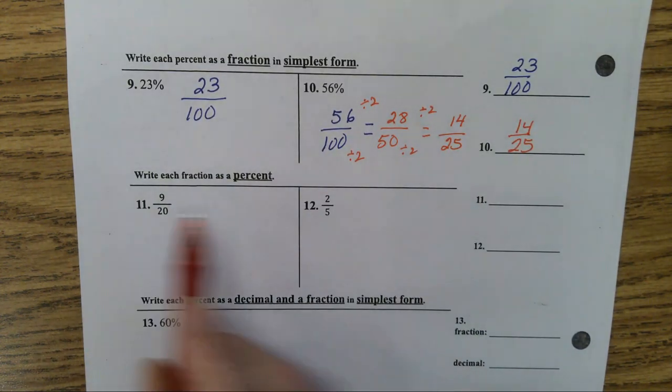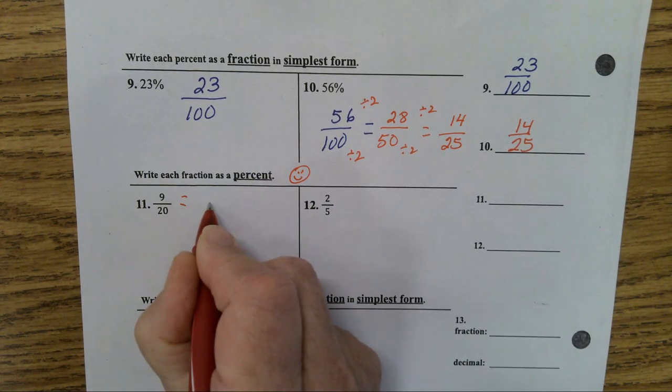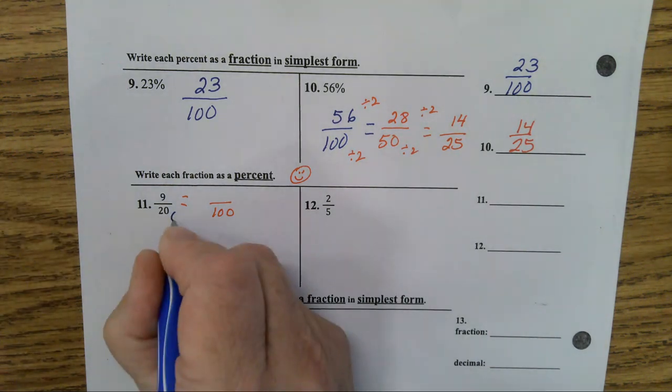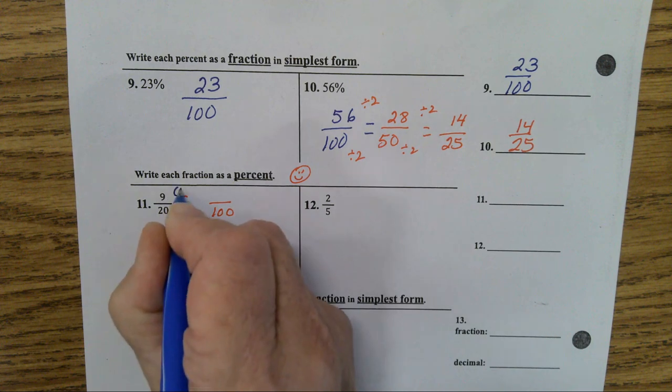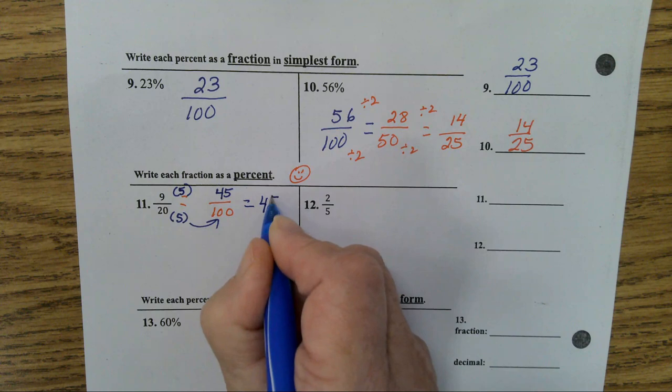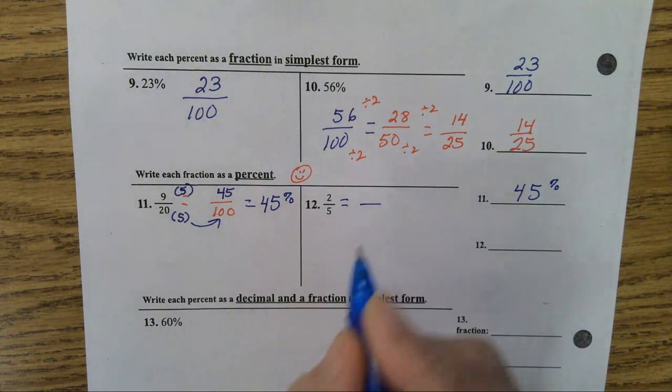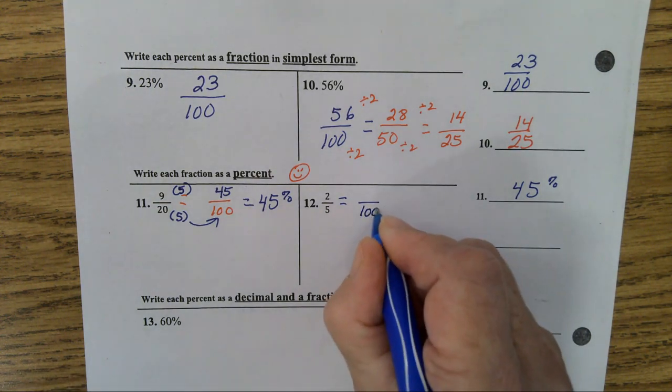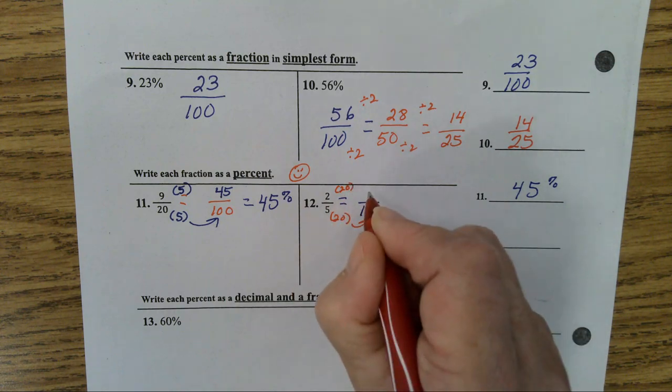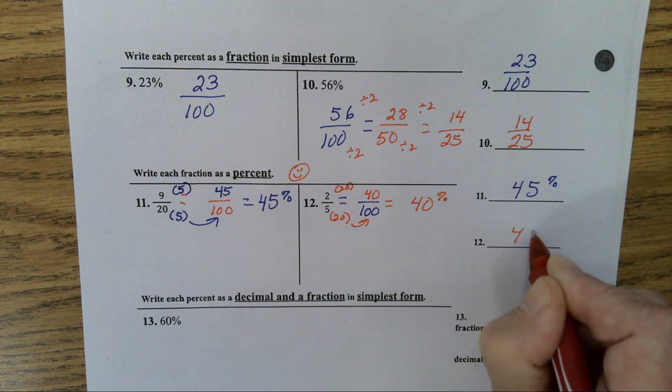Now, we're changing our fraction to a percent. I like these. Why do I like these? Because the denominator is a factor of ten or a hundred. So, I know that 20 can turn into a hundred. How does 20 turn into a one hundred? Yes. You multiply by five. If you have five twenty-dollar bills, you have a hundred. So, what's nine times five? Forty-five. Now, 45 over a hundred equals 45%. I like these better because you don't have to divide. They don't take as long. Now, is five a factor of a hundred? Yes. Five times what's a hundred? Twenty. If you have twenty five-dollar bills, you have a hundred dollars. So, twenty times two equals forty. Two-fifths is 40 over a hundred. That's the same thing as 40%. Any questions?